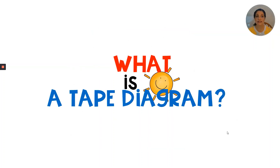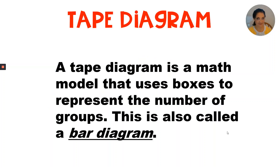What is a tape diagram? A tape diagram is a math model. A math model would be something like an array or a number bond. This is called a tape diagram. It uses boxes to represent the number of groups. We also call a tape diagram a bar diagram. I may be calling it a bar diagram or a tape diagram — your teacher could call it one of those things, but they're the same thing.